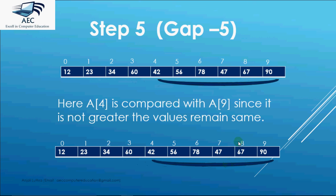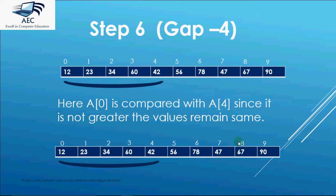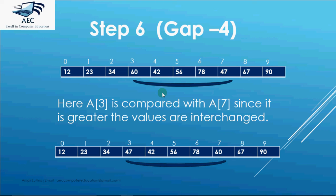Now comes step 6 which will be having 6 comparisons at the gap of 4. So we have a[0] compared with a[4]. Then a[1] compared with a[5]. Then a[2] compared with a[6]. Then a[3] compared with a[7]. It is greater so we will interchange the values. 47 comes at position 3 and 60 goes at position 7.